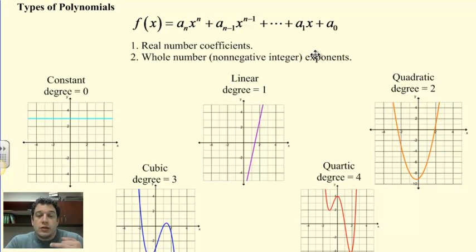One, real number coefficients, and two, whole number or non-negative integer exponents. Basically, as long as the coefficient of a term is real, meaning not i, and the exponents are whole numbers, meaning 0, 1, 2, 3, 4, 5, 6, 7, 8, 9, 10, all the way up to infinity, we're good to go.